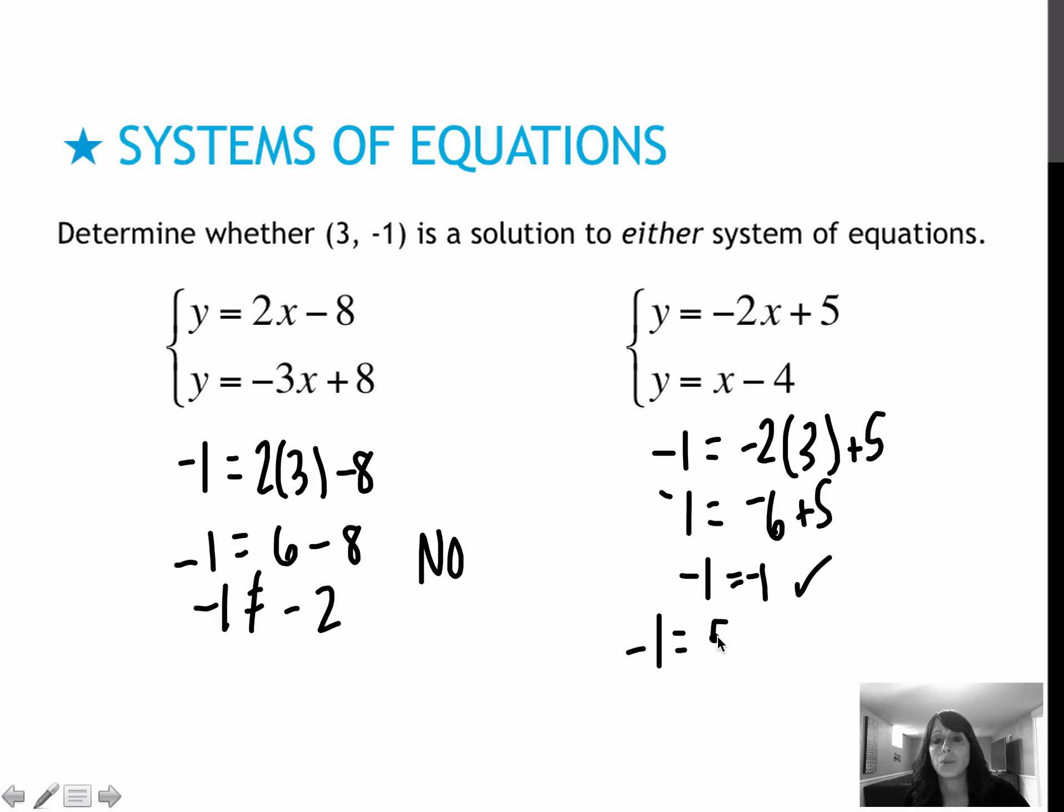Negative 1 equals 3, which is my x value, minus 4. 3 minus 4 is -1. Negative 1 does equal -1. So yes, this is a solution to the system.